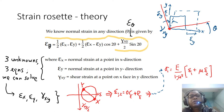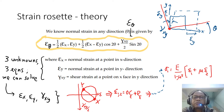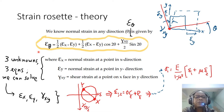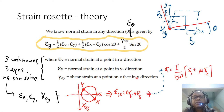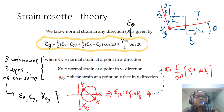This equation relates the strain in any direction if we know epsilon x, epsilon y, and gamma xy — the normal strain in x, normal strain in y, and shear strain on the x-face in y direction. These are three unknowns, and in order to find epsilon x, epsilon y, and gamma xy, we can do measurements in three different angles. The strain rosette provides those angles.